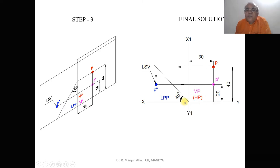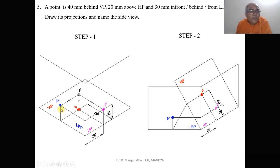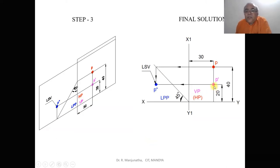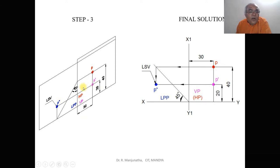We now draw the side view. Both above HP and behind VP are seen in the side view. Above HP is vertical in the front view and also vertical in the side view. Behind VP is vertical in the top view but must become horizontal in the side view. To get this horizontal distance, from the origin adjacent to the horizontal plane draw a 45-degree line, then project the top view point onto the 45-degree line to transfer it. Then project horizontally from the front view to get the side view point.